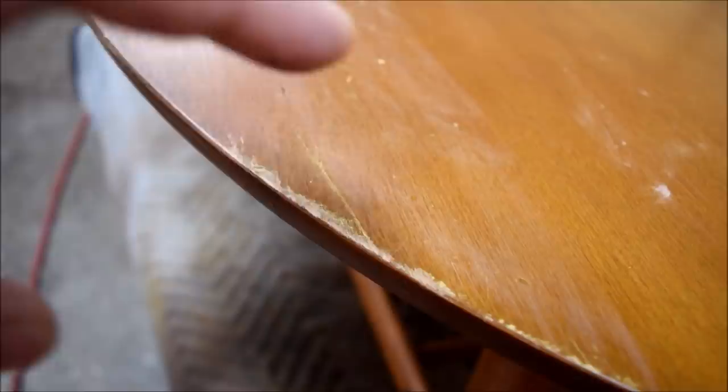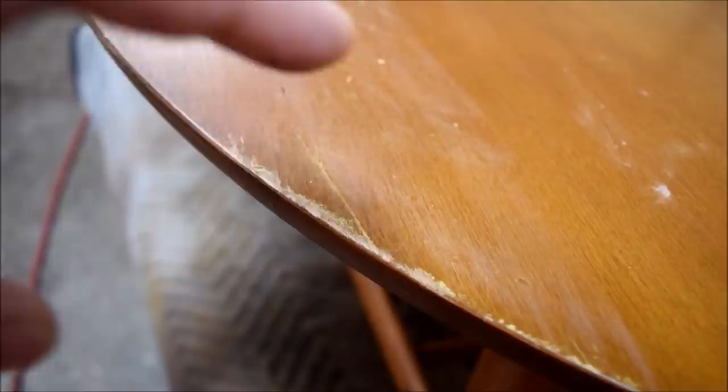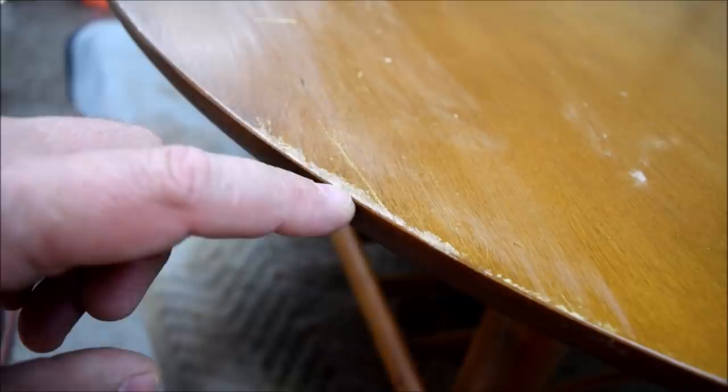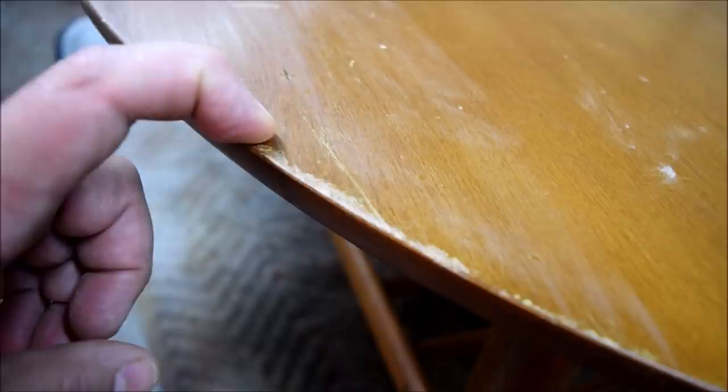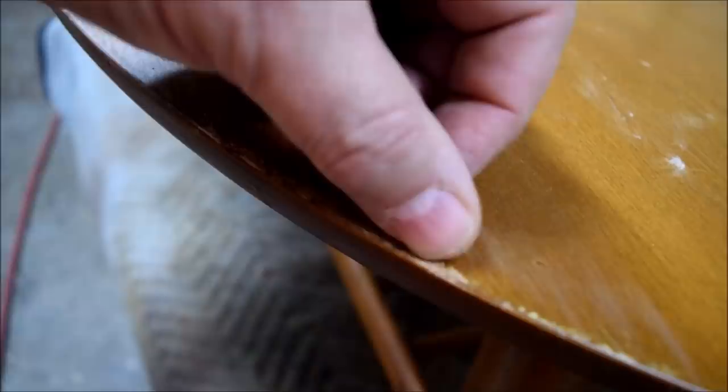And here's an area of color loss on the edge of the table. And we're through the finish and through the color. The first thing I always want to make sure that I do is ease the transition between the old finish and the repair. What I have found is that if you leave that and don't seal that, you wind up with a line. When you put your color in there, it kind of wicks up in there, and you'll wind up with a dark line. So the first thing I'm going to do is sand this with some 320 and hit this area and any other places where we've got color loss like this.